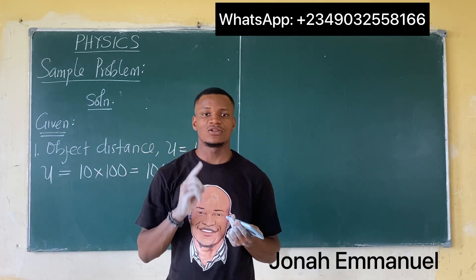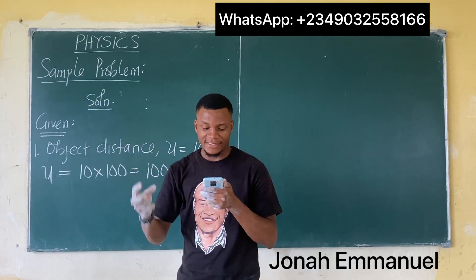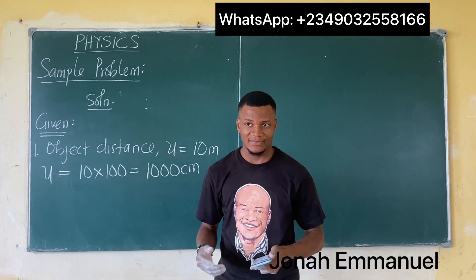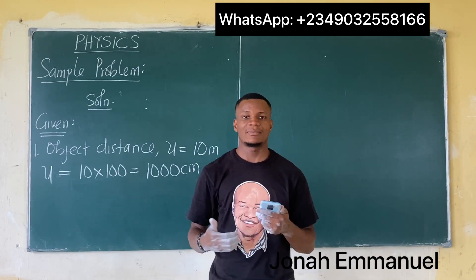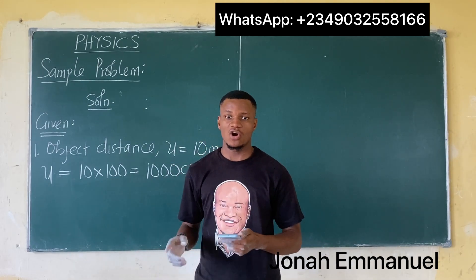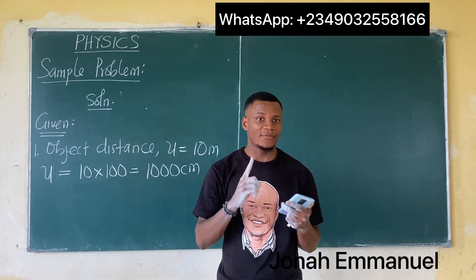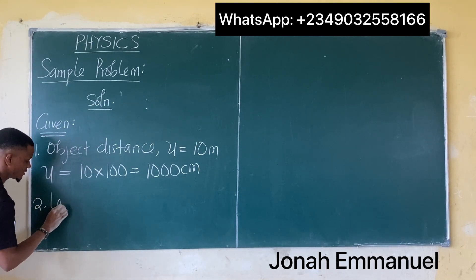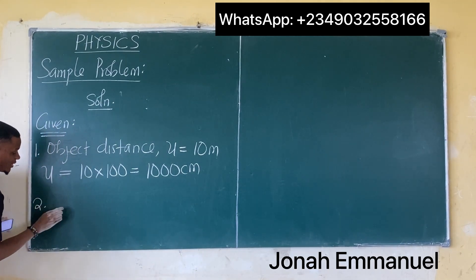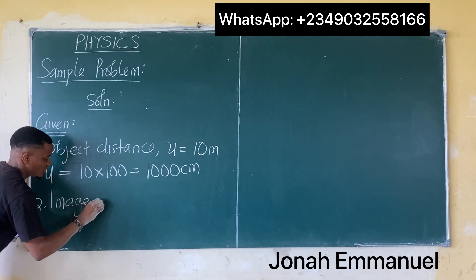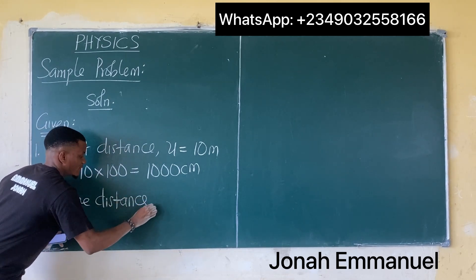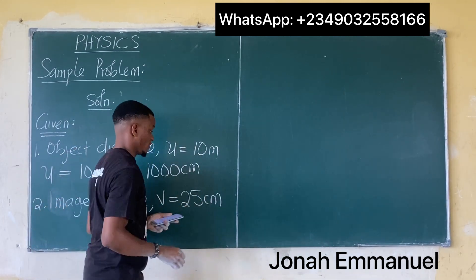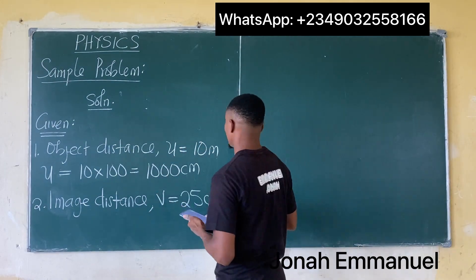Next, from a pinhole camera of length 25 cm. Please note this: the length of a pinhole camera is equal to the image distance. Whenever you're solving questions on optics and you see the length of a pinhole camera, always note that the length equals the image distance. So I'm given the length of the pinhole camera as 25 cm.